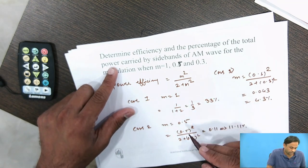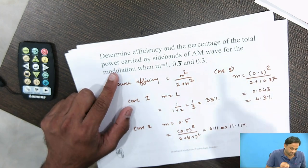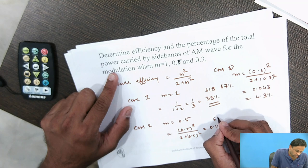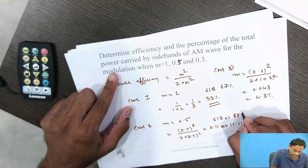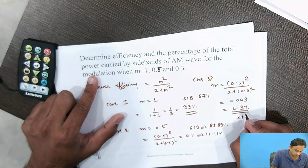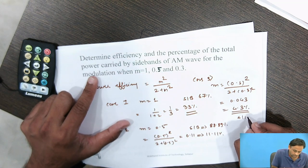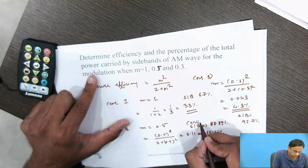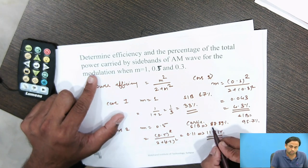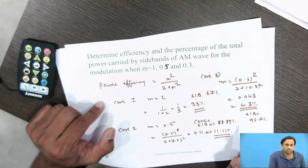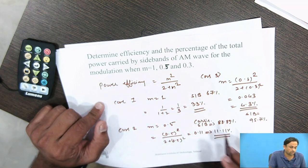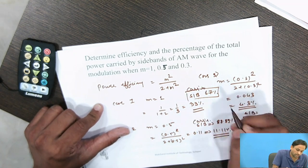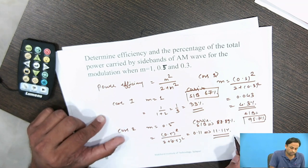From these efficiency values, the percentage of total power carried by the sidebands is: for M=1, sidebands carry 33% and carrier carries 67%; for M=0.5, sidebands carry 11.11% and carrier carries 88.89%; for M=0.3, sidebands carry 4.3% and carrier carries 95.7%. This completes the determination of efficiency and sideband power percentages. We conclude the lecture here.